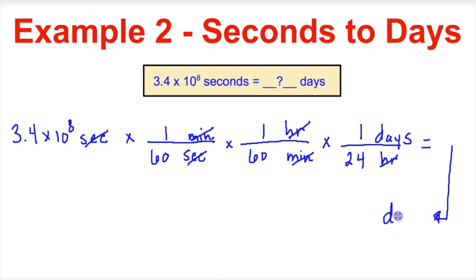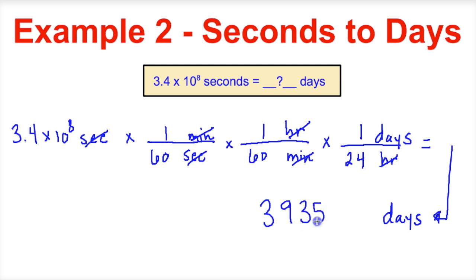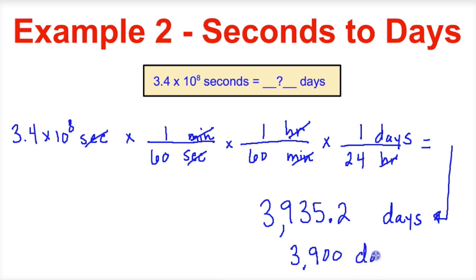We'll get our calculator out and take 3.4 times 10 to the 8th, divided by 60, divided by 60, divided by 24. We end up with a total of 3,935.2 days. So 3.4 × 10⁸ seconds is the same thing as 3,935.2 days. Using the correct number of significant figures — there are 2 sig figs here — this is equal to 3,900 days. Either answer should be acceptable.